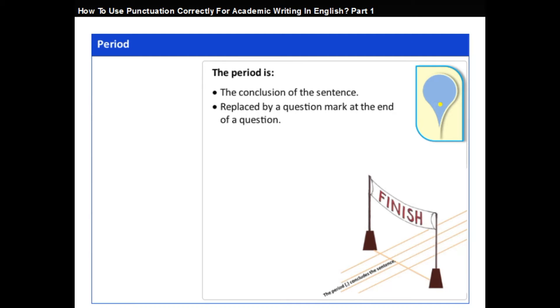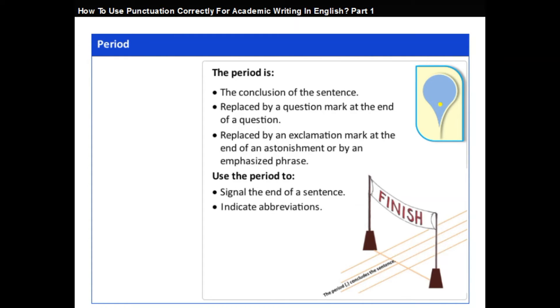The period is replaced by a question mark at the end of a question and by an exclamation mark at the end of an astonishment or an emphasized phrase. The exclamation mark is not used very often in scientific writing. Use the period to indicate the end of a sentence, abbreviation, decimal point, and to end the bulleted list.